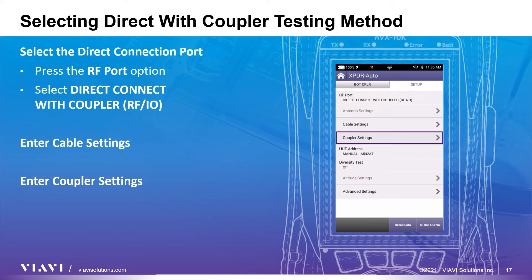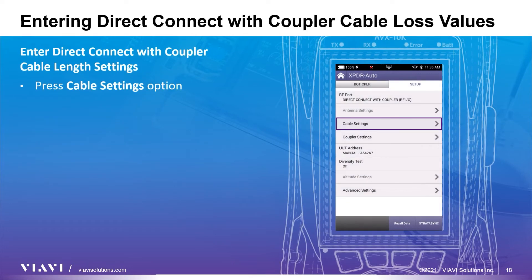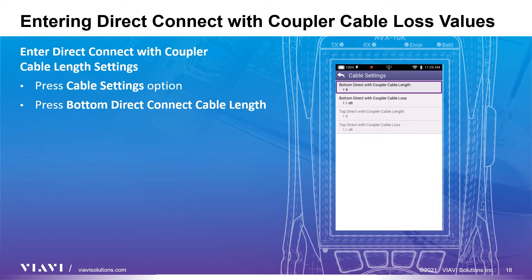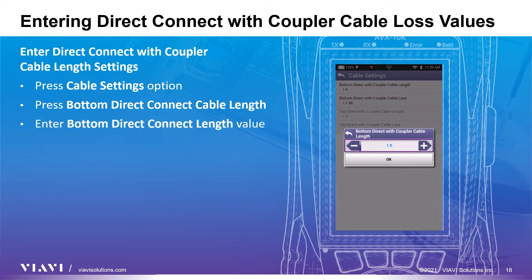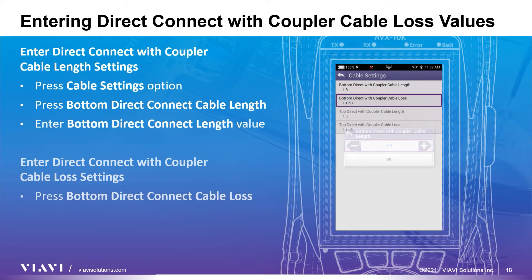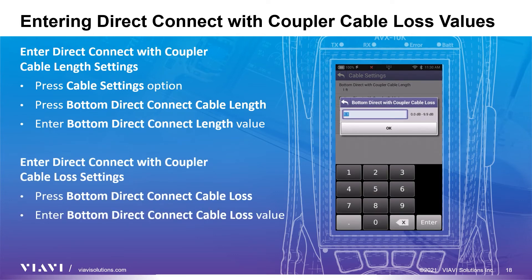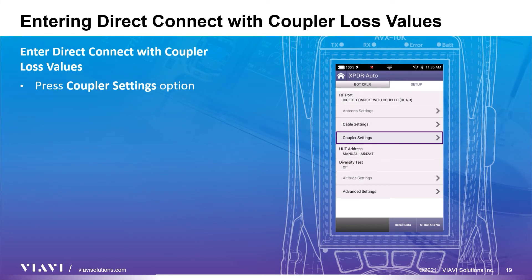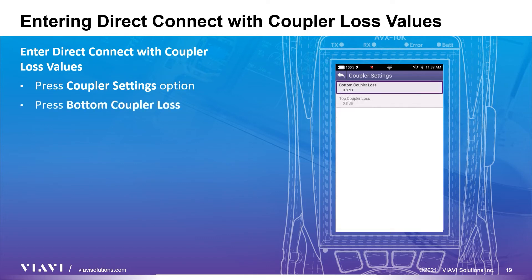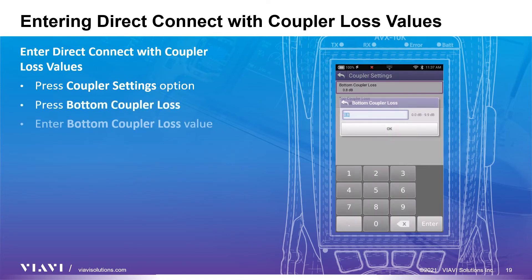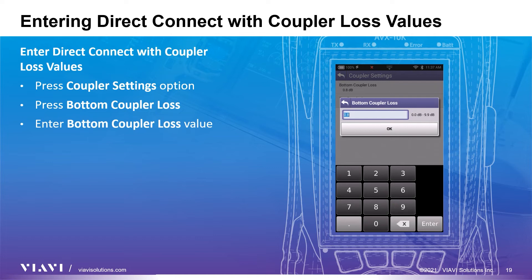When working with couplers, loss and cable length values need to be entered. Look for the loss value labels on the coupler and the cable and enter these values in the appropriate windows. Press the cable settings button to access the cable settings, then set the coupler cable length values and the coupler cable loss values. Next, press the coupler settings option, then press the bottom coupler loss option and enter the value from the coupler. When diversity is set to on, the top coupler loss settings become available. Those are the standard settings for direct connect with coupler.